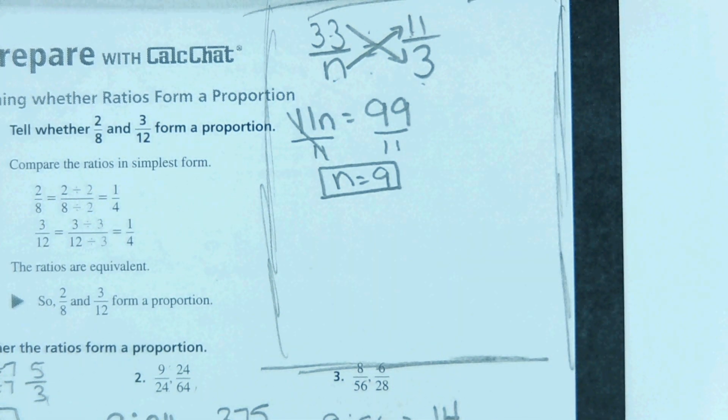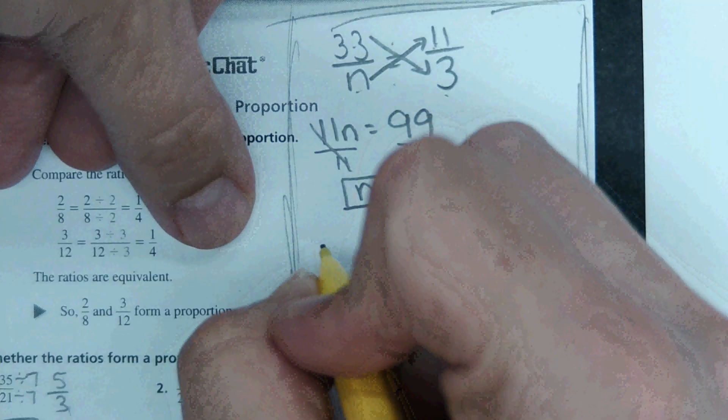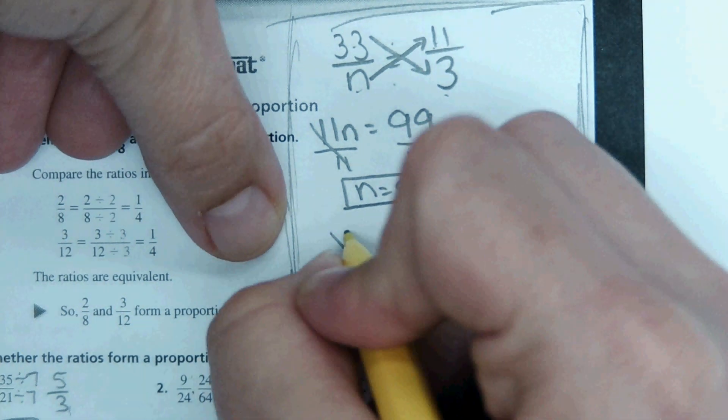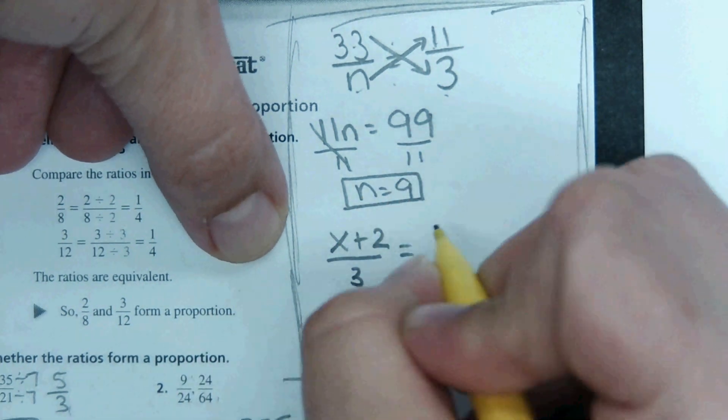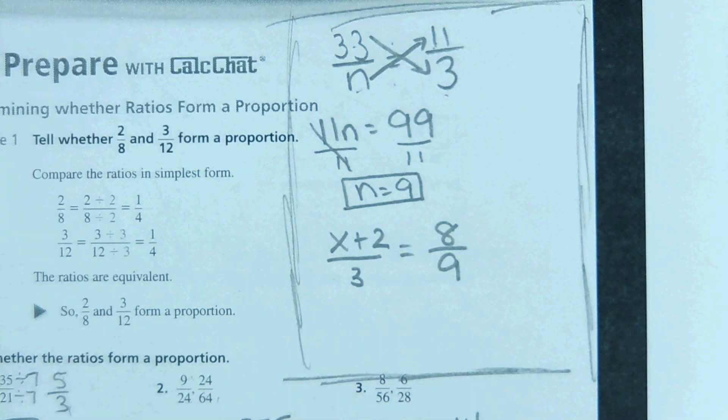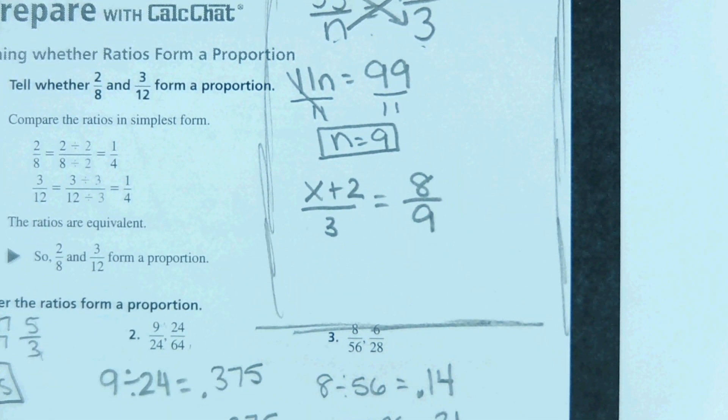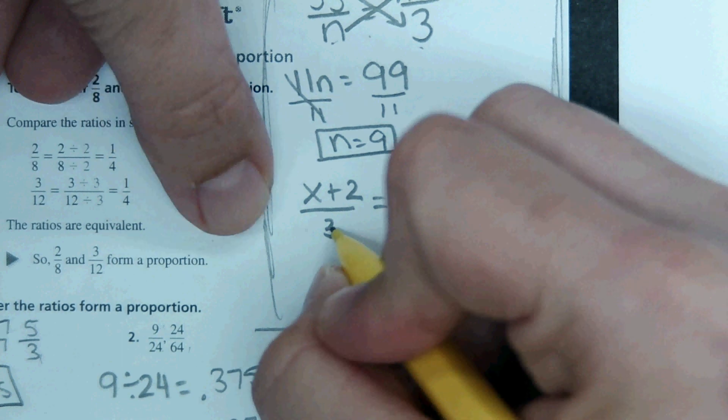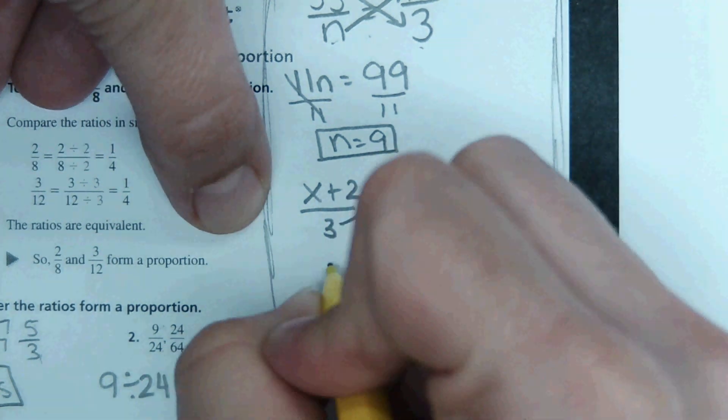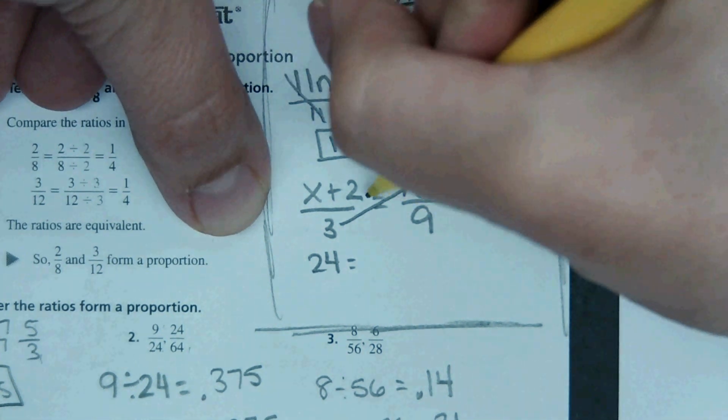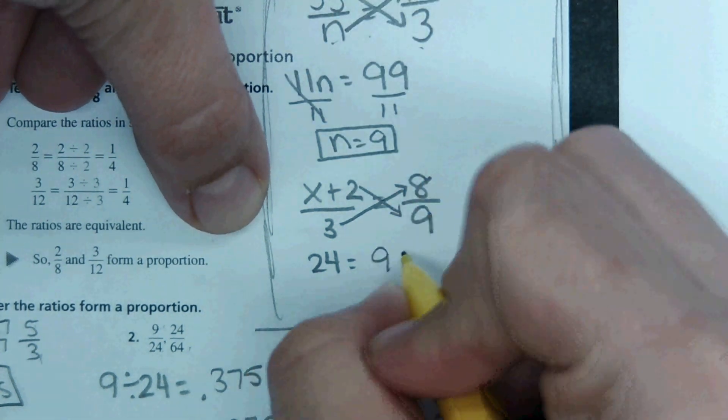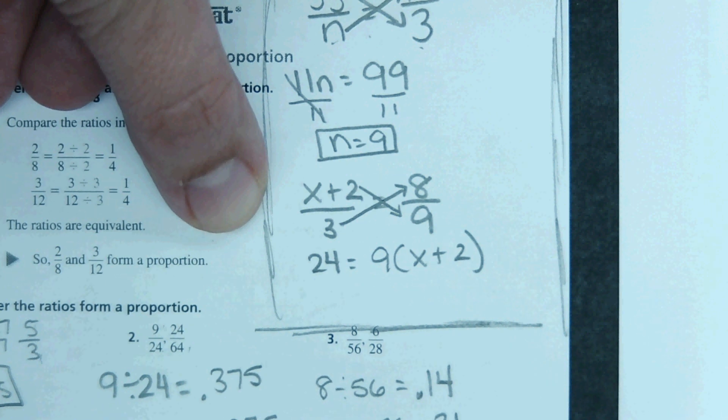So what might a harder problem look like? Well, let's see. How about this: x plus 2 over 3 equals 8 over 9. So with this same process, we're solving for x. We're going to use cross multiplication. 3 times 8 is 24. And then for this, this is where some students get stuck. This is how you set it up: 9 times x plus 2, like that.